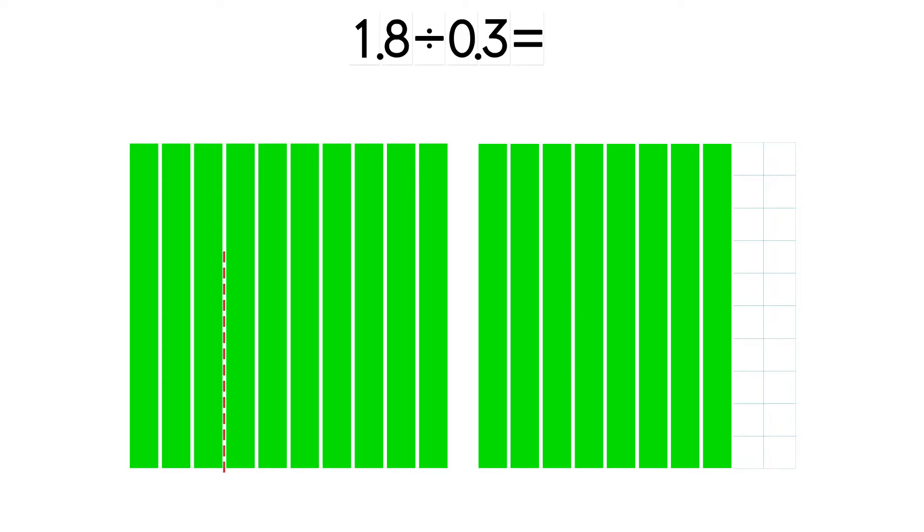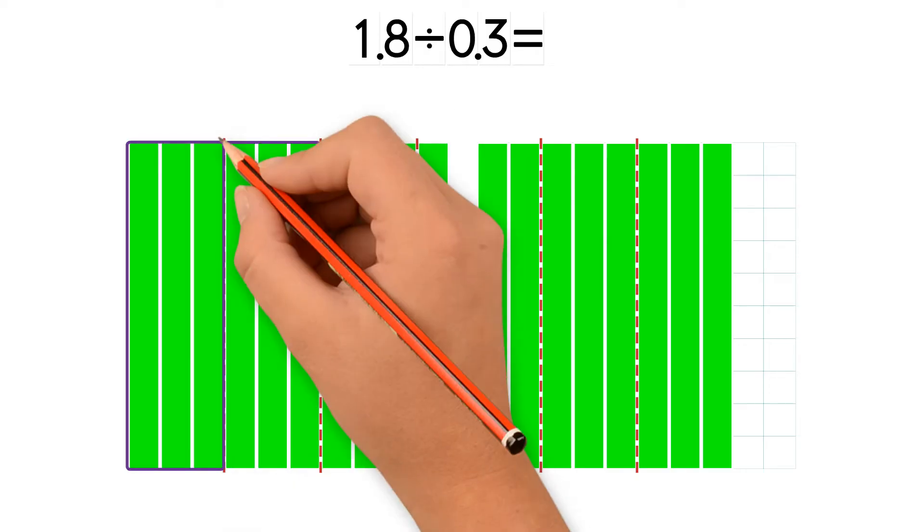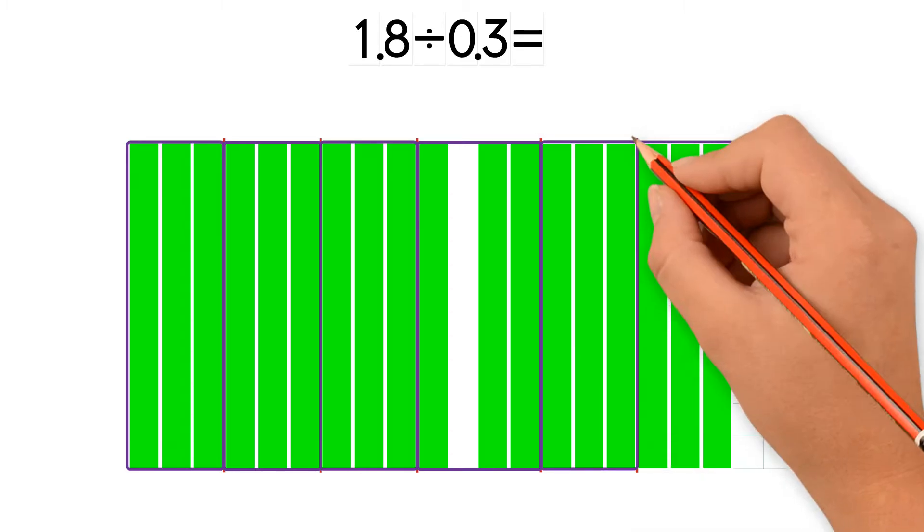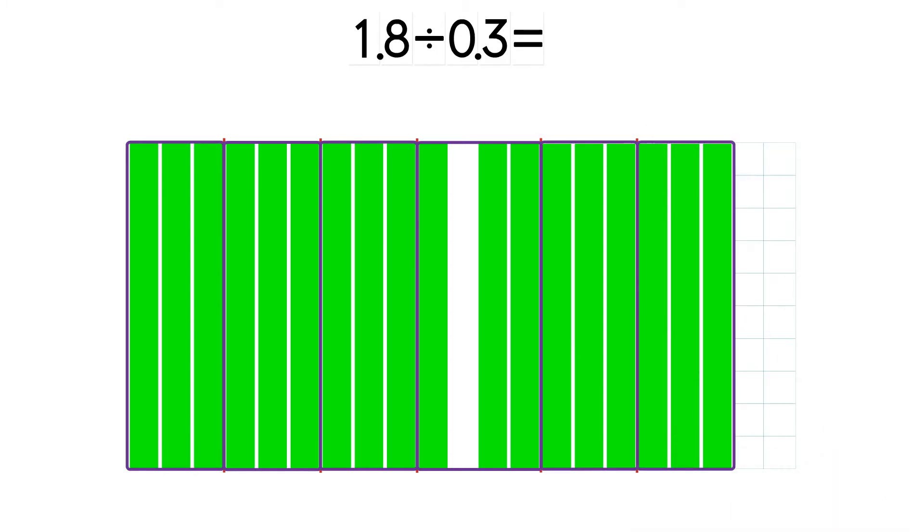We divide the 18 tenths into groups of 3 tenths to represent the divisor, 0.3. Now we count the groups. There are 6 groups of 0.3 in 1.8. So 1.8 divided by 0.3 equals 6.